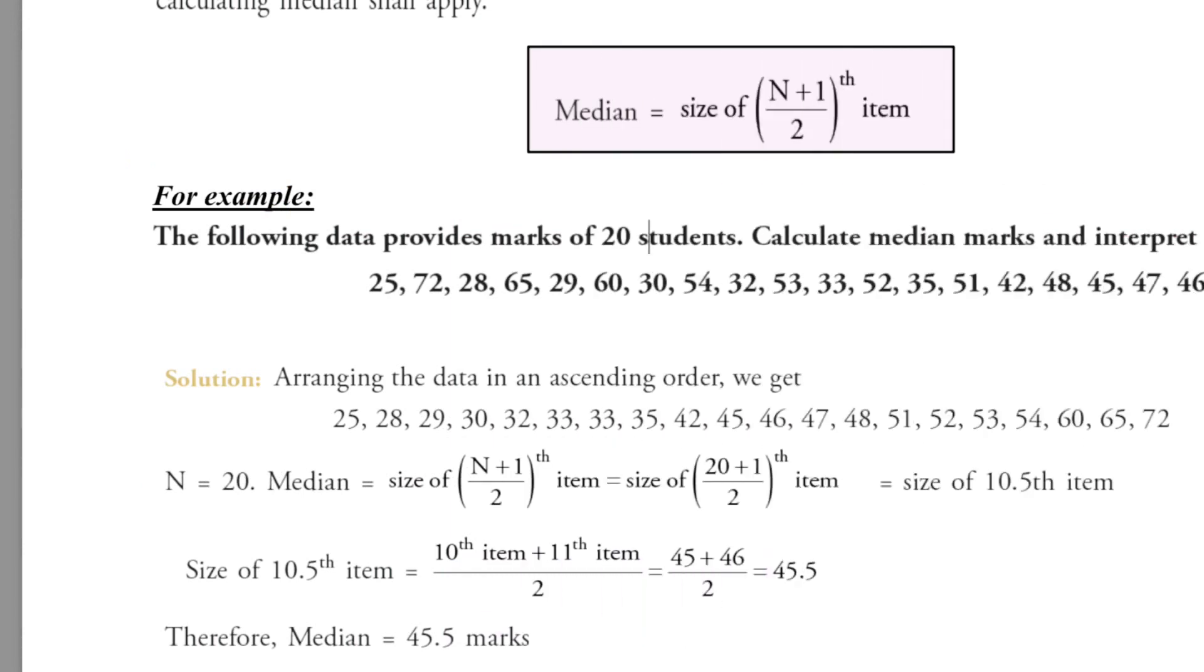The number of observations is 20. So the formula would be 20 plus 1 upon 2, that is 21 upon 2 is equal to 10.5. Size of 10.5 item is 45, 45 plus 46 upon 2. That comes to 45.5. Therefore, median marks are 45.5.